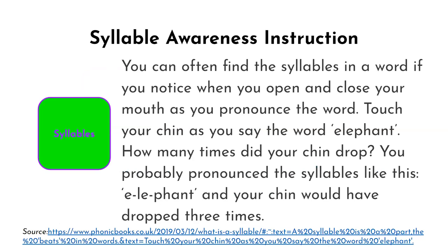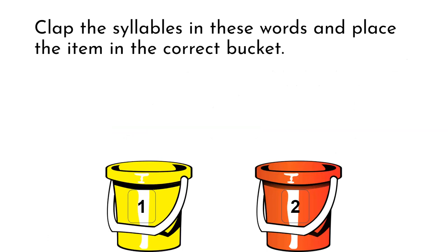Resources are readily available for teaching syllables, and many teachers do this well. One way to locate syllables is by touching your chin as you say a word—you can count the number of times your chin drops to identify the number of syllables. In a sorting activity, students sort items by the number of syllables. This could be done with real objects or pictures. If students place items in what seems to be the wrong bucket, ask them to verbalize the words again. Perhaps they're calling a cat a kitten—cat has one syllable and kitten has two, which would explain the discrepancy.